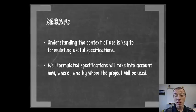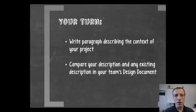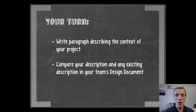In recap, understanding the context of use is really key to formulating useful specifications that meet the environment your project will go into. Well-formulated specifications will take into account all of those factors: who, what, where, why, and how this project is going to be used. Now it's your turn. Write a paragraph describing the context of use of your project — it could be a list or a description in paragraph form, that's up to you. Then take that list and compare it against what's in your design documentation for your team, and if there's anything that needs to be updated, go ahead and do that now.